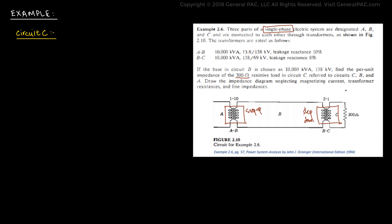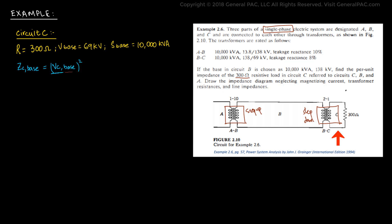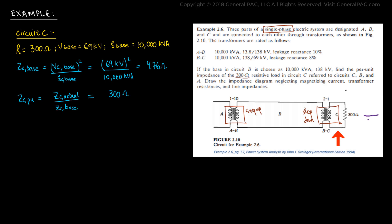Since we are given the resistance in circuit C, we'll solve for the per unit values of that resistance at a base voltage of 69 kV. Circuit C also has a base power of 10,000 kVA. So the base impedance for circuit C equals the base voltage squared divided by the base power: 69 kV squared over 10,000 kVA, which gives us 476 ohms. The per unit impedance of the load in circuit C is the actual impedance divided by the base: 300 ohms divided by 476 ohms, giving us 0.63 per unit.